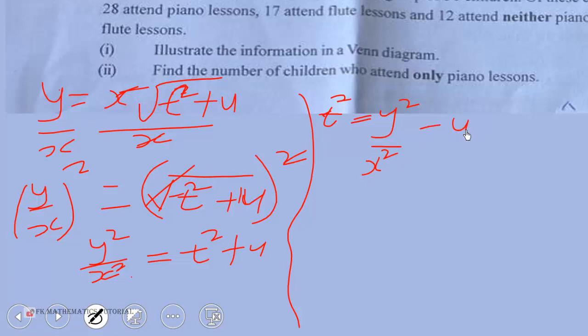If that is the case, we can call it LCM on the right hand side to get y squared minus u x squared over x squared. T squared is equal to that.